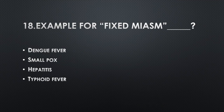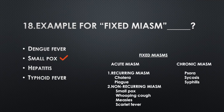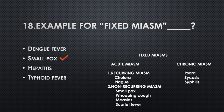Example of a fixed miasm — Option A: Dengue fever, Option B: Smallpox, Option C: Hepatitis, Option D: Typhoid fever. Answer: Option B, Smallpox. Fixed miasms are of two types: acute miasm and chronic miasm. Acute miasm is classified into recurring (e.g., cholera, plague) and non-recurring (e.g., smallpox, whooping cough, measles, scarlet fever). Chronic miasms are psora, psychosis (sycosis), and syphilis.